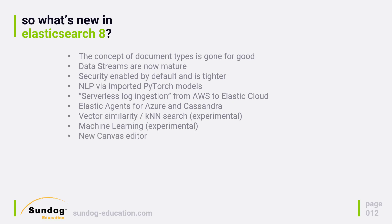They've also updated the UI for the Canvas editor, which we'll cover more in the course. There are lots of changes in how geographic information is queried and in map data. They're now supporting something called vector tiles, the latest trend in geographic information systems. The new vector tile search API returns vector tiles, which include a hits layer, an aggregation layer, and a metadata layer — which will make more sense if you're in the world of geographic information systems.